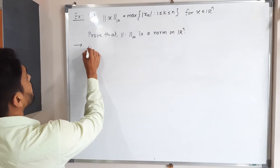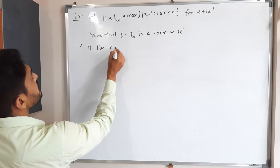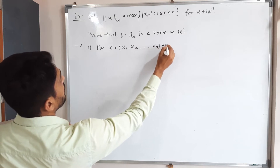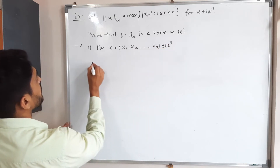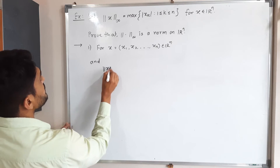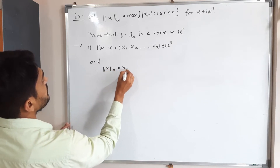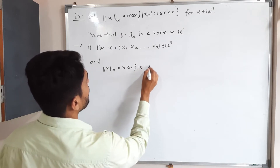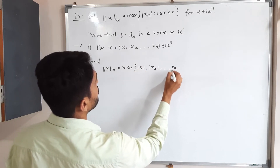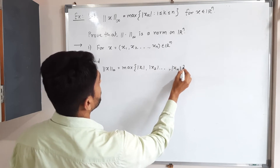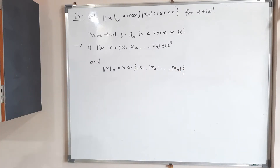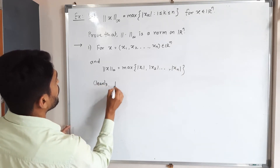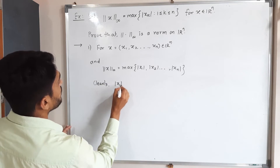For the first property, we take one element x from ℝⁿ, so there will be n components. We rewrite: ‖x‖∞ is defined as the maximum of |x₁|, |x₂|, and so on up to |xₙ|.